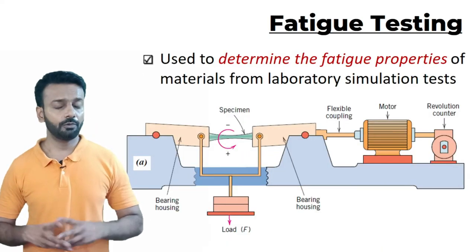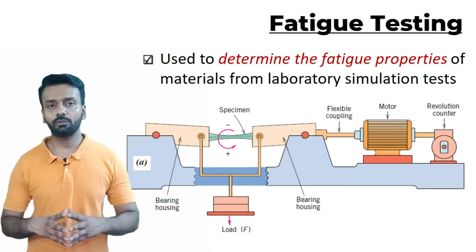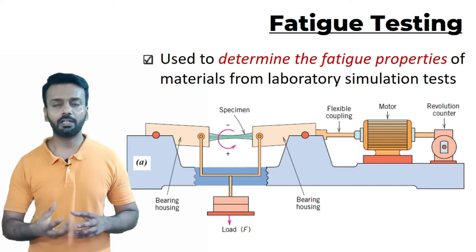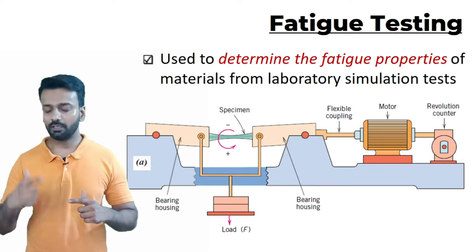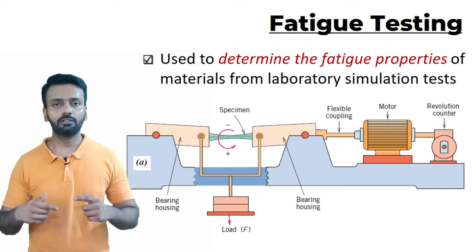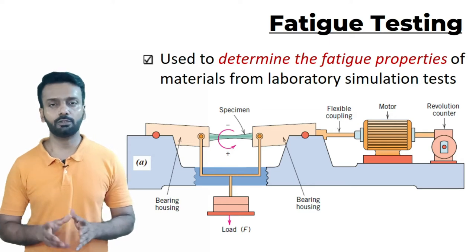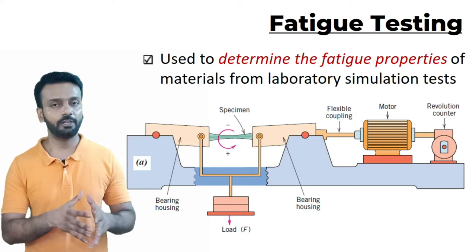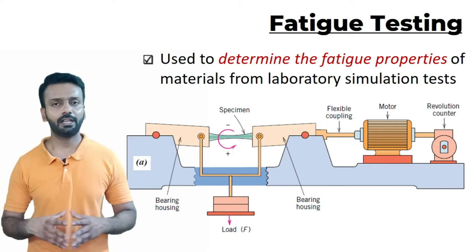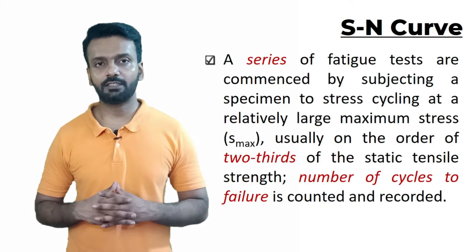How do we test the material for fatigue failure? We have equipment shown here where you keep a standard specimen in the machine and apply a load. You give repetitive cycles, and there is a counter that records the number of cycles. After a while the material will fail, so we know the number of cycles to failure — that is called the fatigue limit of the material.